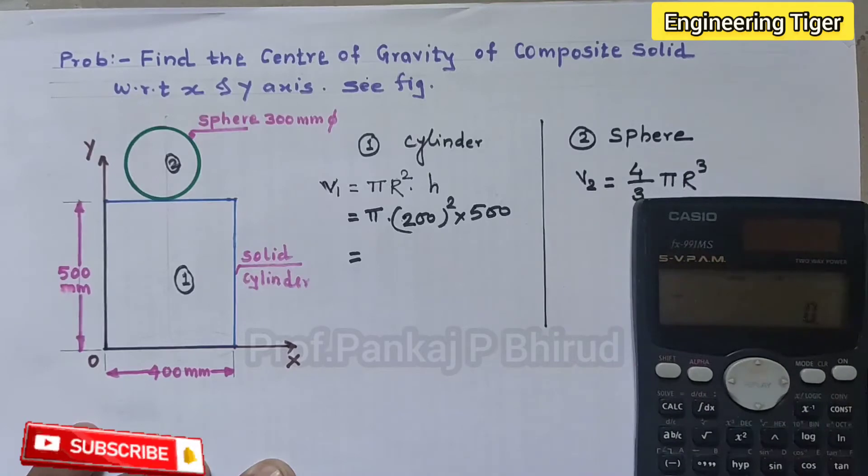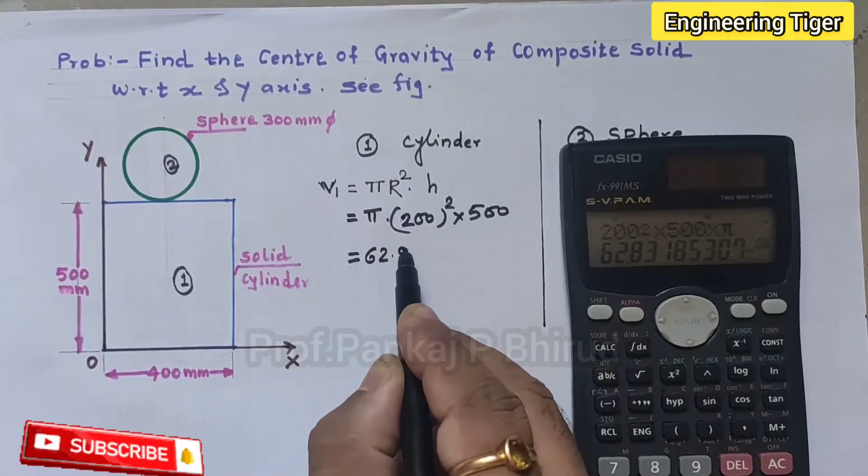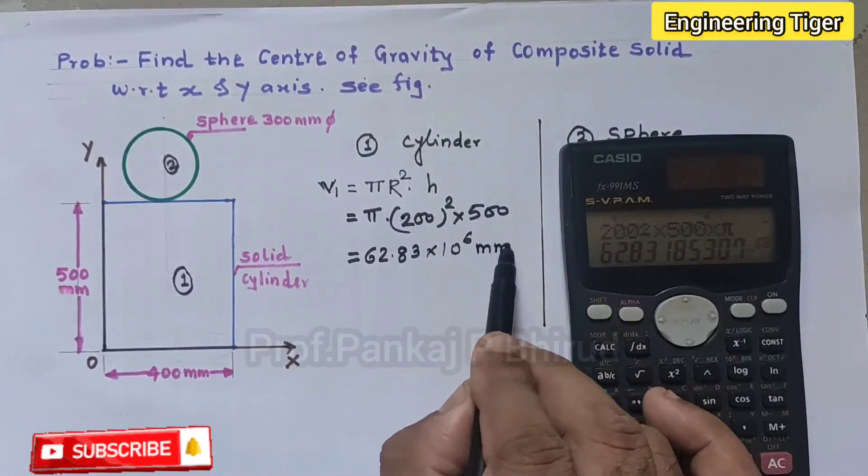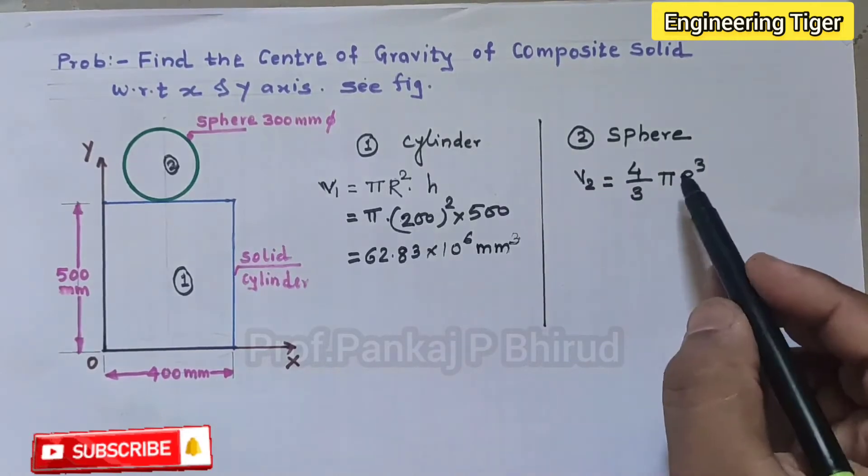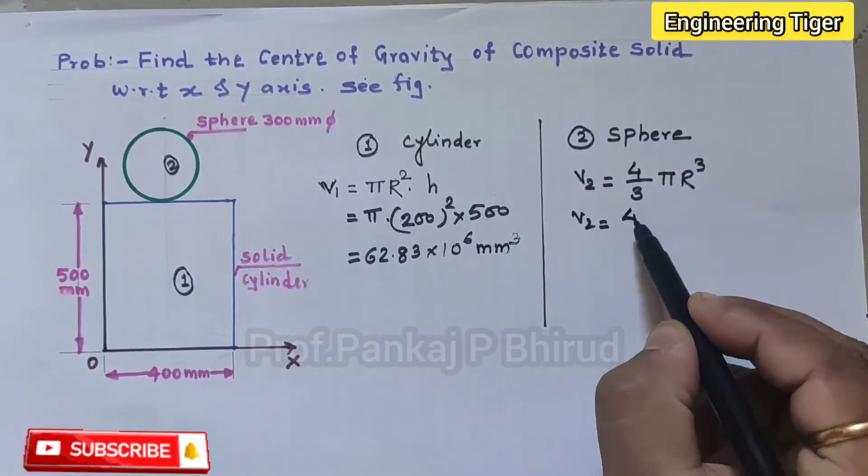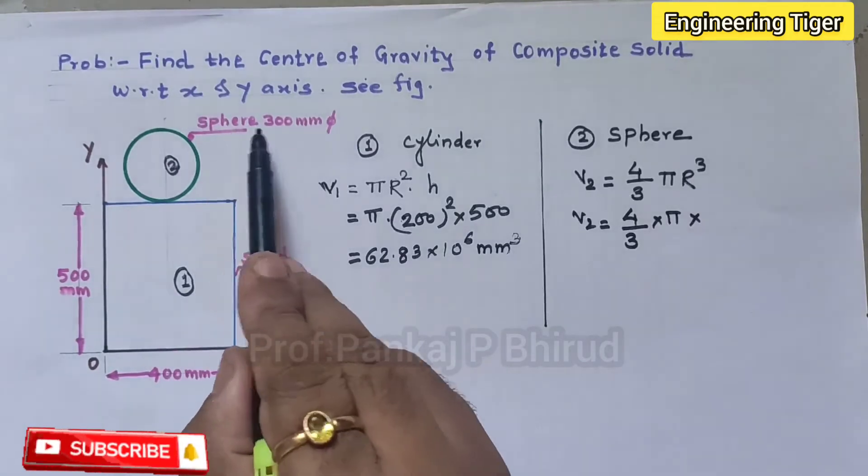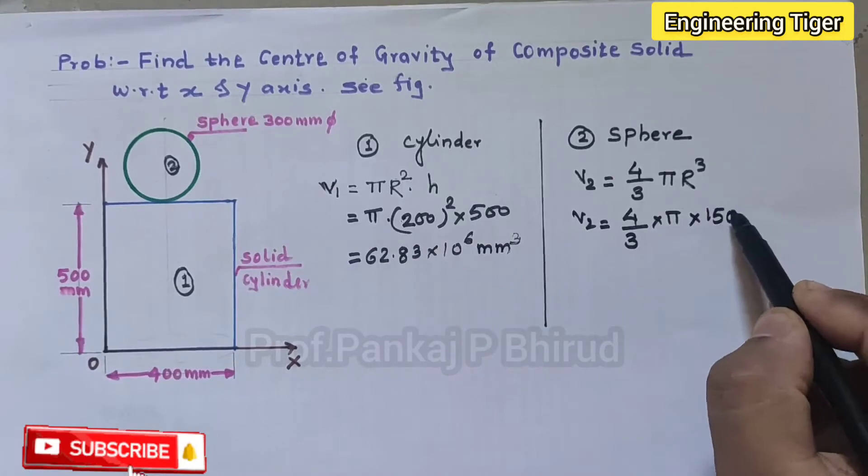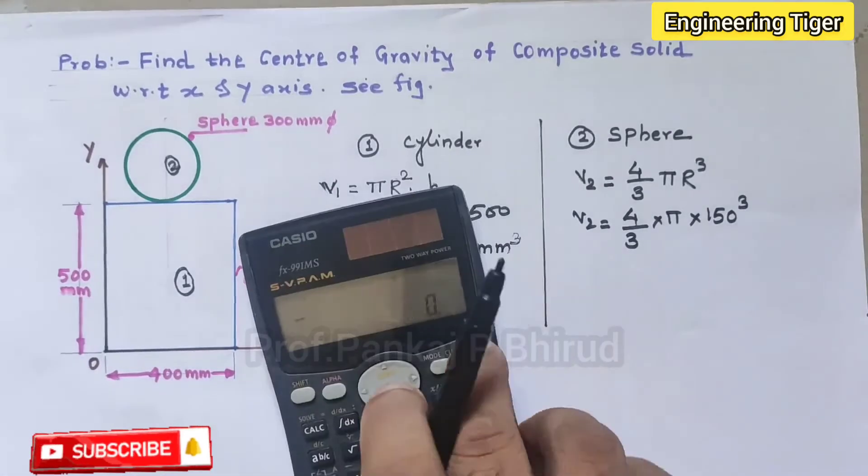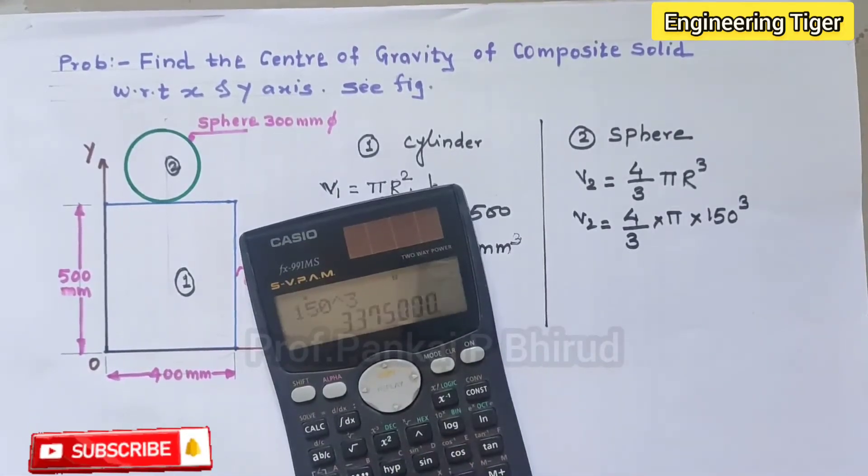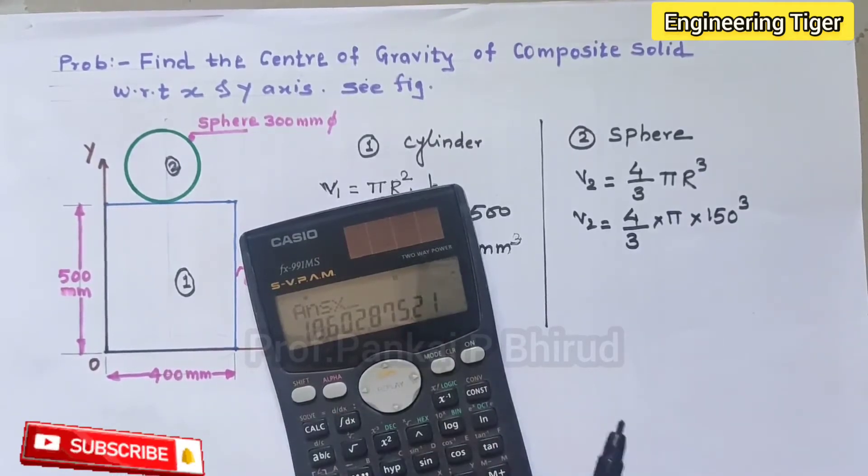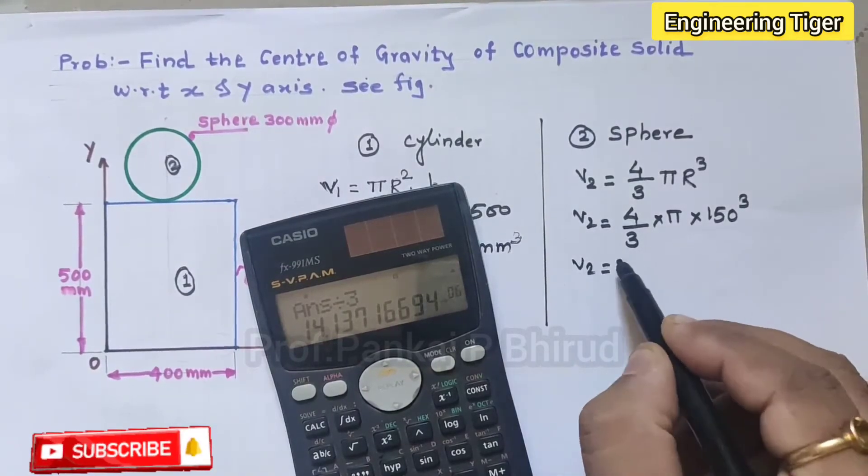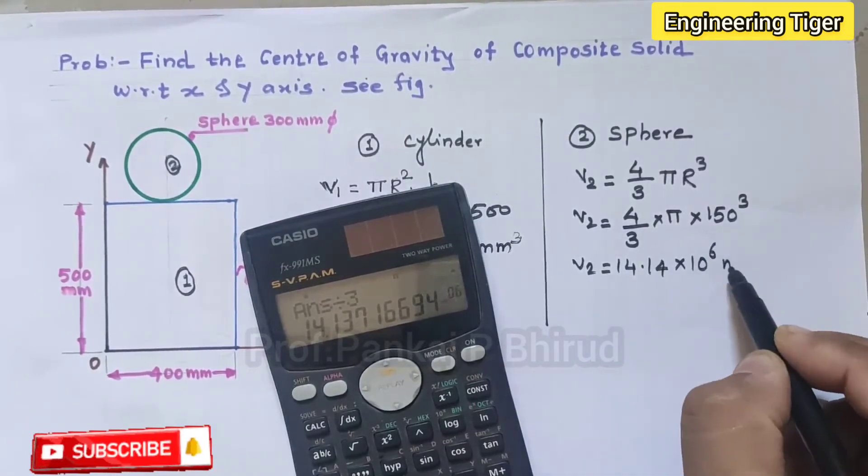Now calculate volume for the sphere. V2 equal to 4 upon 3 into pi. Now radius of sphere, here diameter is 300 so its radius is 150 and it's cubed. So by calculating 150 cubed into pi into 4 divided by 3, we'll get V2 equal to 14.14 into 10 raised to 6 mm cubed.